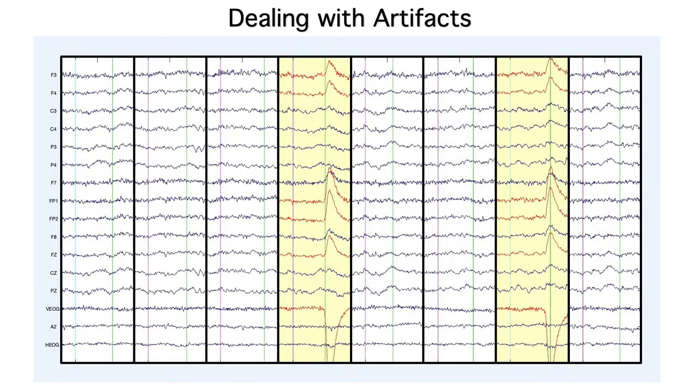Second, we can throw out trials that contain large artifacts. For example, the trials highlighted in yellow here contain eye blinks, and we'd leave those trials out when we make our average ERP waveforms. This is called artifact rejection.